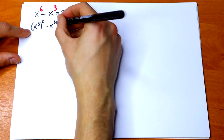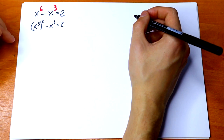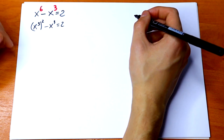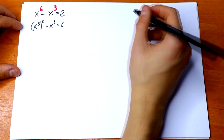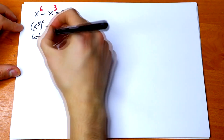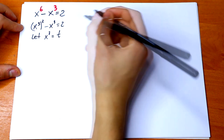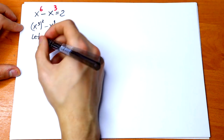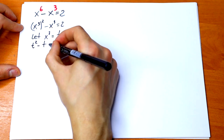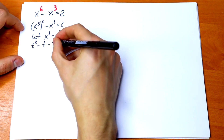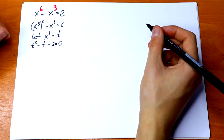Minus x cube equal to 2. So what we're going to do next? We can use a substitution, because we have x cube right here and x cube right here as well. So let x cube equal to t. So we'll have an interesting equation: t squared minus t, and taking both terms to the left, minus 2 equal to 0. This is an interesting quadratic equation.